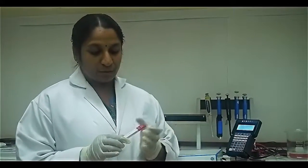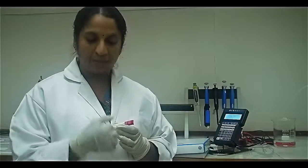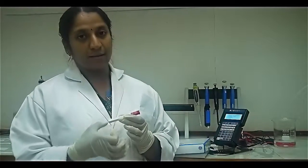If the sample doesn't have any aflatoxin, when the sample is moving, because there is no aflatoxin it cannot bind with the antibody. The antibody will automatically go and bind with the antigen dispensed on the test line, and we will have a pink color line on the test line and another line for control.